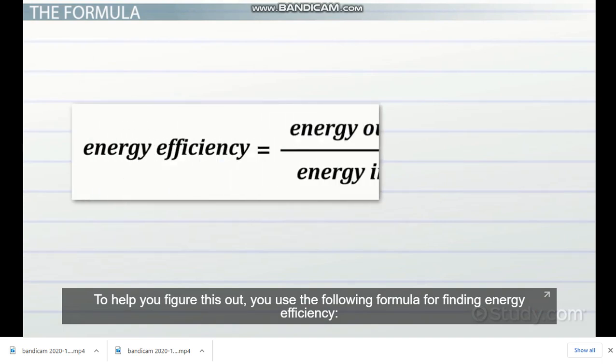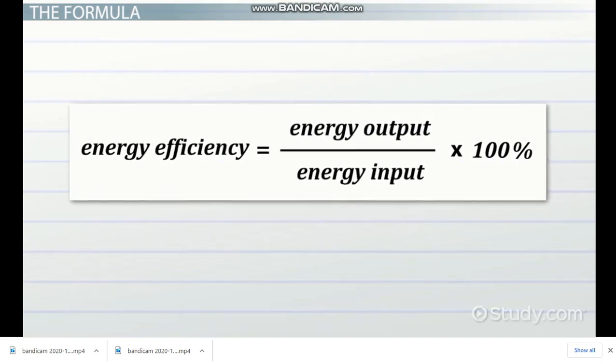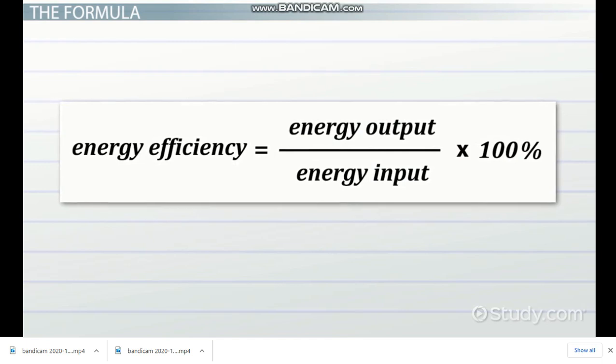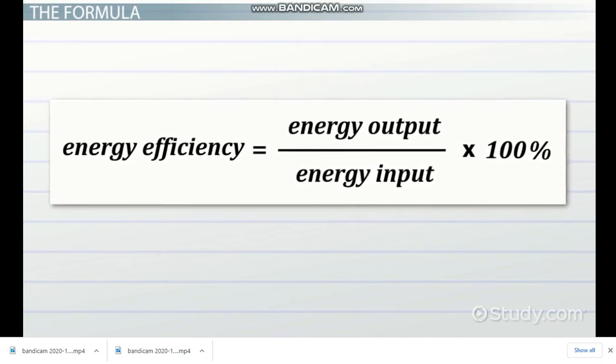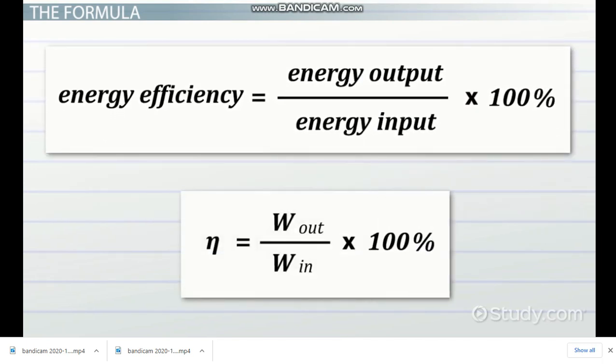To help you figure this out, you use the following formula for finding energy efficiency. Energy efficiency equals energy output divided by energy input all times 100%. This can be written as eta equals W sub out divided by W sub in all times 100%.